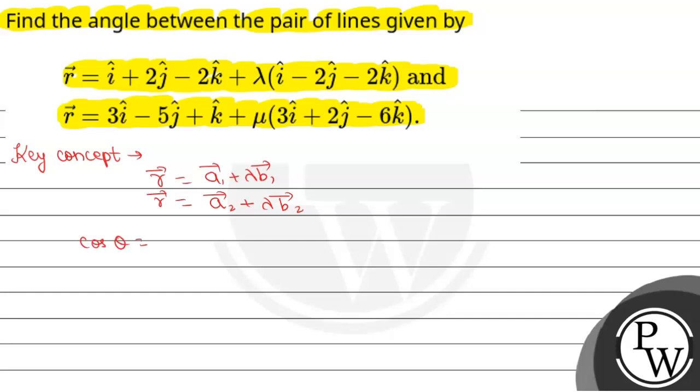So cos theta is equal to vector b1 dot vector b2 divided by mod of vector b1 multiplied by mod of vector b2.